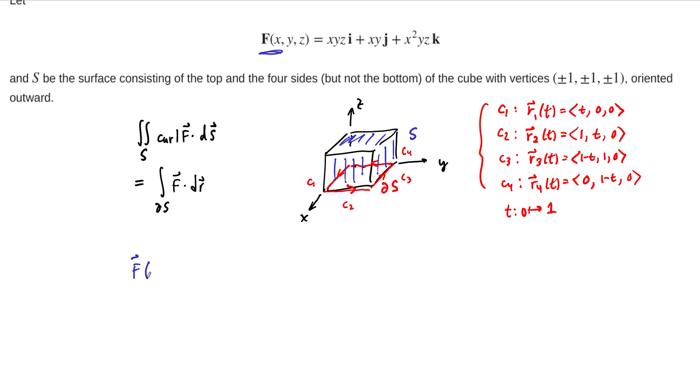F along C1, it's going to be t times 0 times 0, so that's 0. And then in the second component, t times 0, so that's 0. And then t squared times 0 times 0, so 0. That means we don't even have to worry about this integral.